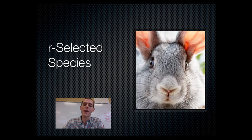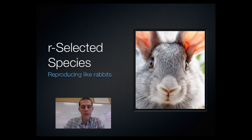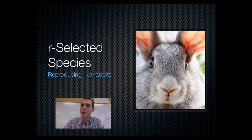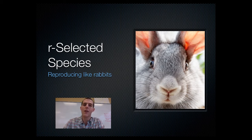R-selected species is the opposite. You've heard the term reproducing like rabbits? That is an R-selected species. R stands for intrinsic growth rate, which is the maximum rate at which an organism can reproduce. R-selected species have zero regard for carrying capacity — they make as many babies as they can, reproduce as quickly as they can, and usually overshoot carrying capacity and then experience a die-off.